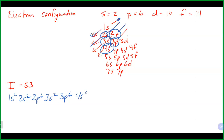Then we zigzag back to 3p6, then go to 4s2. That should be 20 at that point. We then come back after the 4s — remember now we go into the d, which would be 3d10, followed by 4p6. That's 36 at that point.